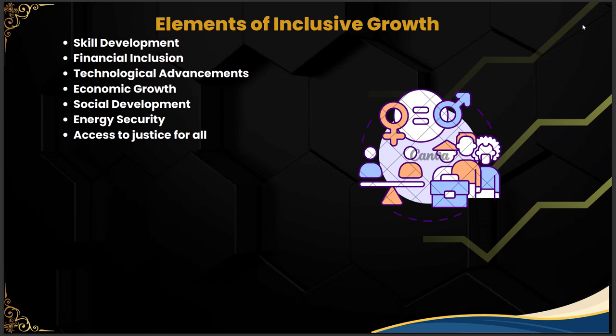The first element of inclusive growth is skill development. India is currently in the phase of demographic dividend, where the working-age population is at its highest, so skill development plays a vital role. A UNICEF 2019 report states that at least 47% of Indian youth are not on track to have the education and skills necessary for employment in 2030, which is very alarming for the country's demographic dividend.